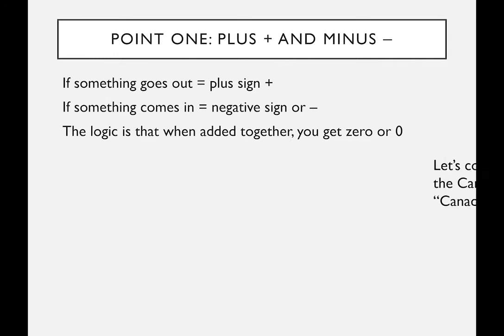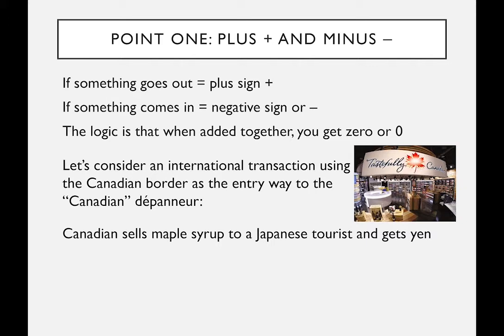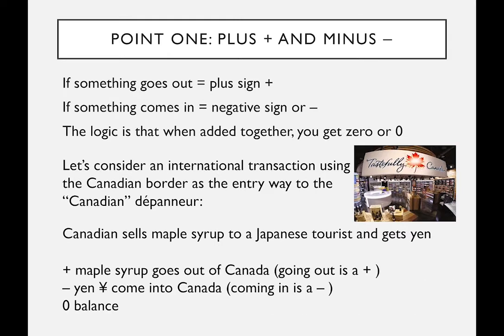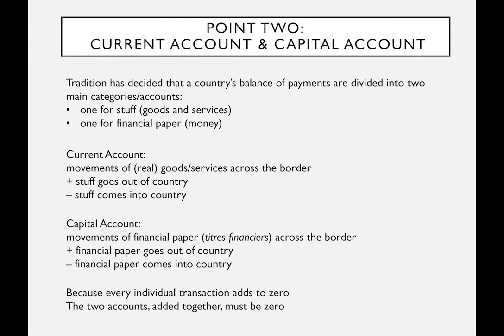Consider a transaction involving a Canadian and a foreigner: a Japanese tourist at the Vancouver airport duty-free wants to take maple syrup back to Japan. He gets on the plane and flies back to Tokyo, taking the maple syrup out. In Canada's balance of payments, think of Canada's border like the store door. The maple syrup going out is a plus; the yen or credit card payment coming into Canada is a minus. Add the two together: you get zero.